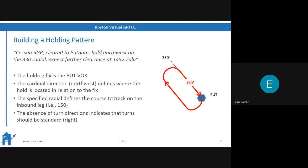When you're on the northwest side, on the 330 radial, we're not holding outbound. We're always holding inbound to the VOR. The opposite of heading 330 is 150 — that's how we get our inbound track. So in this particular hold, we would start at the Putnam VOR, turn right, fly outbound on a 330 heading for one minute, turn right again, join the 330 radial inbound on a 150 heading, fly that for one minute — now we're back at the Putnam VOR. We continue like that until we're given further clearance by ATC.